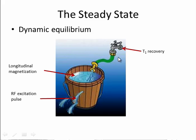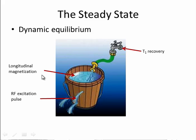Going back to the steady state analogy — the bucket of water — the water really represents the longitudinal magnetization. If the water level is going up and down, we are not in a dynamic equilibrium state. Just as in the gradient echo situation, if our longitudinal magnetization throughout the sequence is not stable, we are not in a steady state. The water going in is analogous to T1 recovery, and the water coming out is analogous to the excitation pulse.